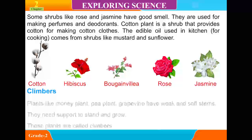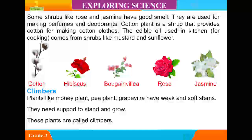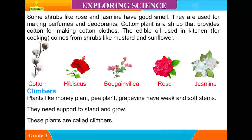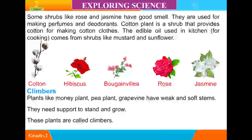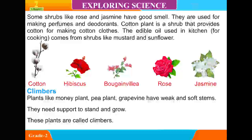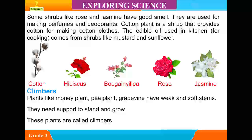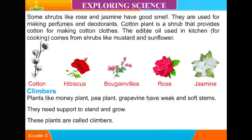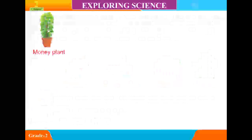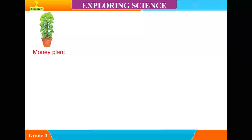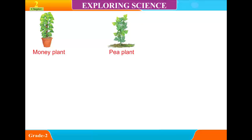Climbers. Plants like money plant, pea plant, and grapevine have weak and soft stems. They need support to stand and grow. These plants are called climbers. Examples: money plant, pea plant, grapevine plant.